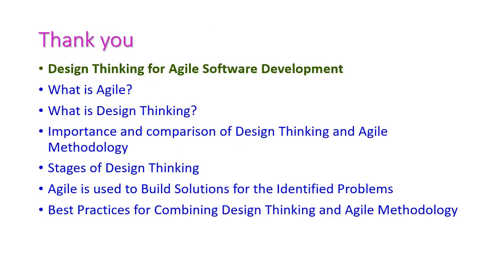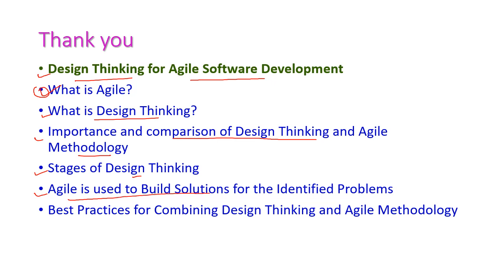Let us quickly recall the important topics discussed in this session on design thinking for agile software development. We discussed what agile is, what design thinking is, the importance and comparison of both, the various stages of design thinking, how to build solutions for identified problems using agile, and finally the best practices for combining design thinking and agile methodology. Thank you, that's all for this session. We will meet again with another important topic in the next session.